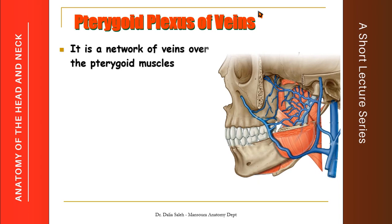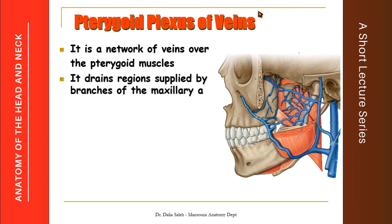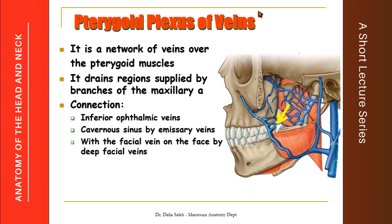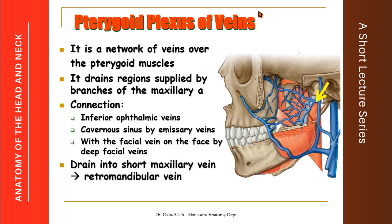The pterygoid plexus of veins is a network of veins over the pterygoid muscles. It drains the regions supplied by the branches of the maxillary artery. It is connected with the inferior ophthalmic veins inside the orbit, and with the cavernous sinus by emissary veins. It is also connected with the facial vein by deep facial veins, so infection can be transmitted from the face to the cavernous sinus through these connections. Finally, it drains into a short maxillary vein, which unites with the superficial temporal vein to form the retromandibular vein.